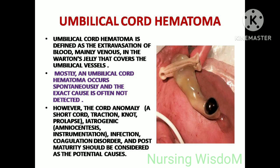Umbilical cord hematoma is defined as the extravasation of blood, mainly venous, into the Wharton's jelly that covers the umbilical vessels. Mostly it occurs spontaneously and the exact cause is often not detected. However, cord anomalies including short cord, traction, knot, and coils can be causes. Iatrogenic causes include amniocentesis and instrumentation; infection, coagulation disorders, and post-maturity should also be considered as potential causes.